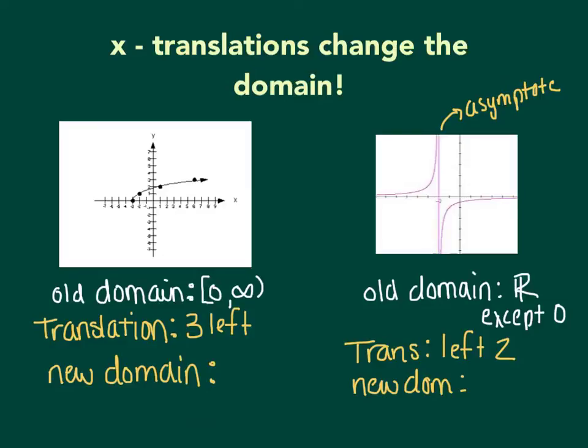Now let's look at how x translations change the domain. On the left, you'll see the square root function again. I've listed the old domain for the parent function as 0 to infinity. Now this graph has undergone a translation of 3 to the left.